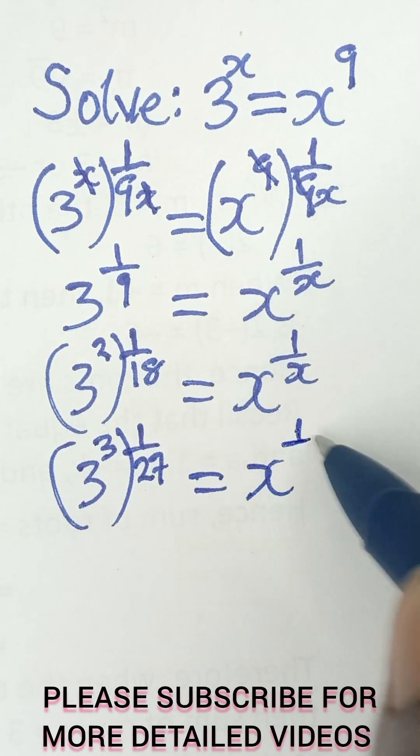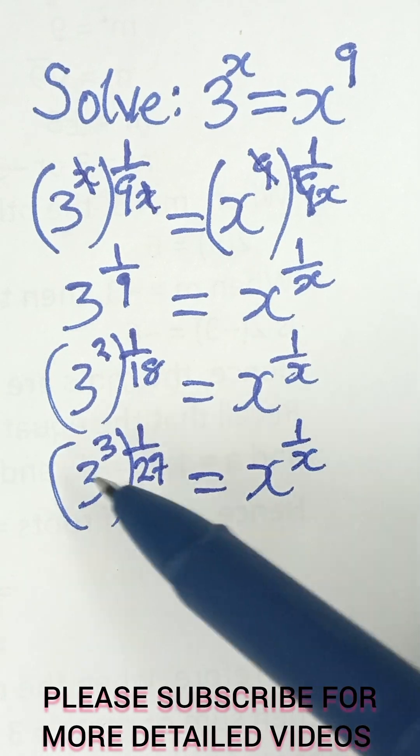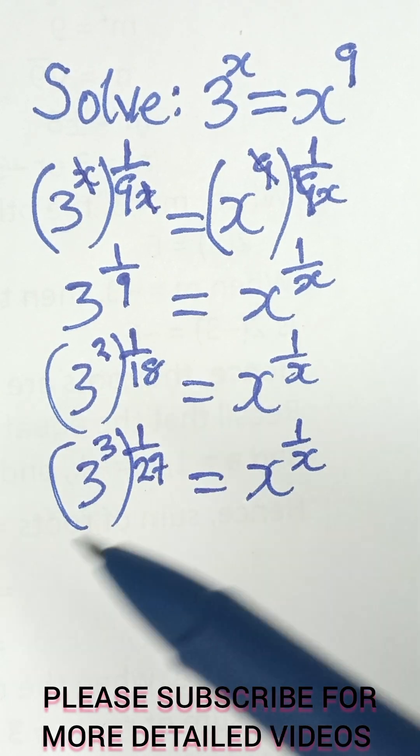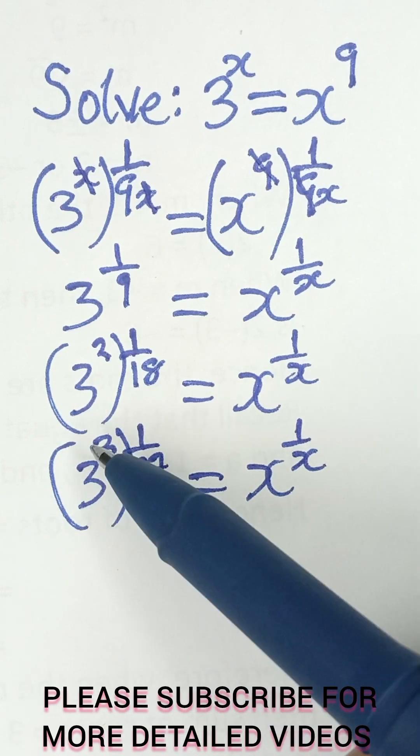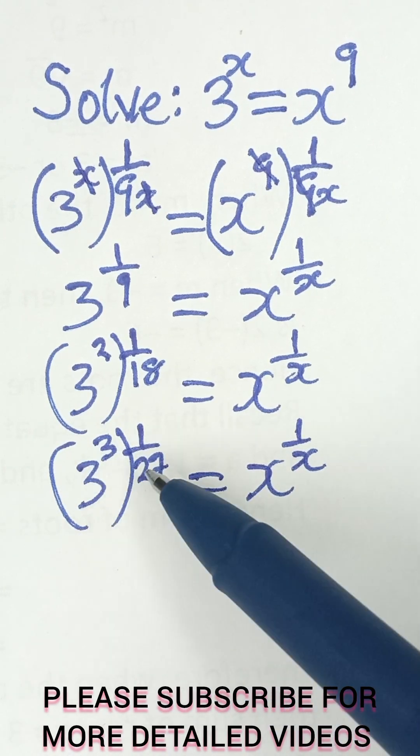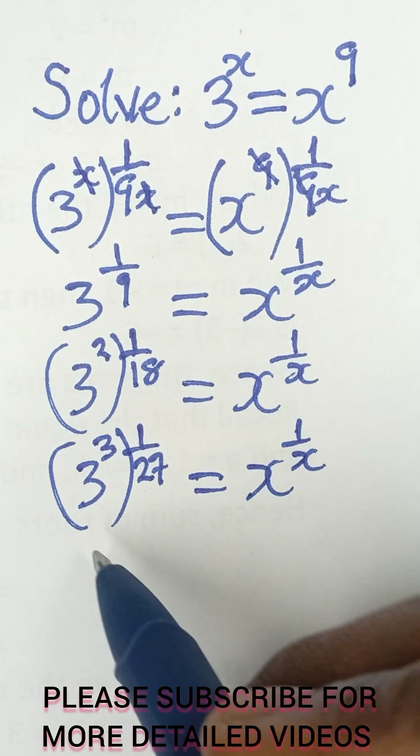Until you arrive at a value that this one will be exactly equal to this. So we can stop here now because 3 raised to the power 3 is equal to 27. So once we arrive at a value that are equal, then we know that we are close to our answer.